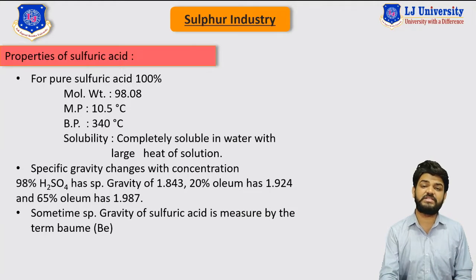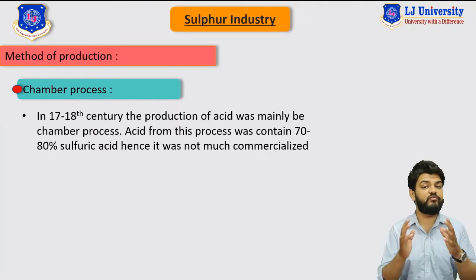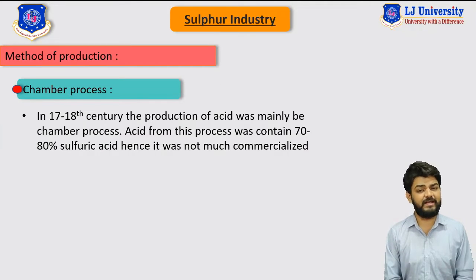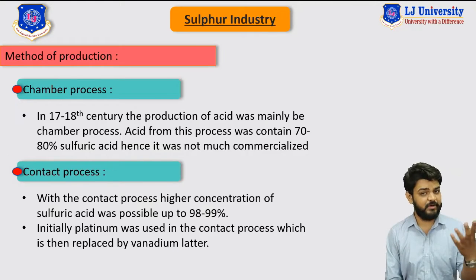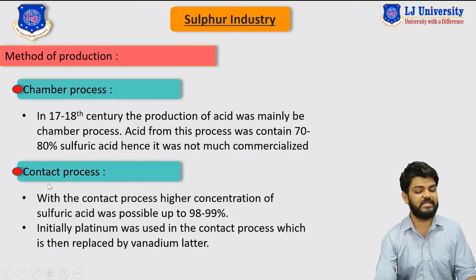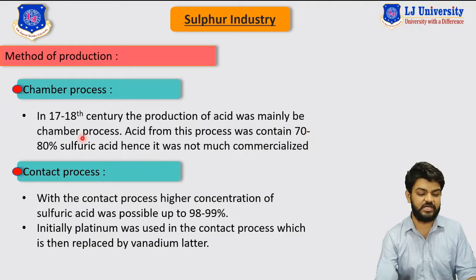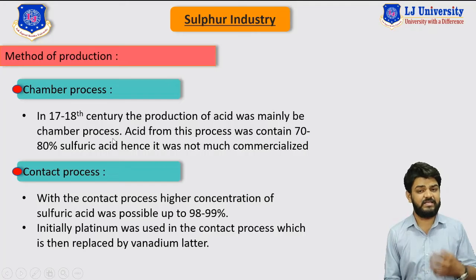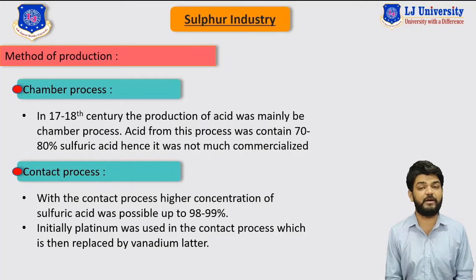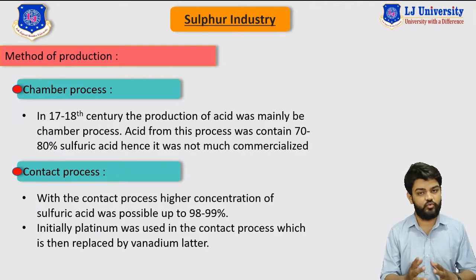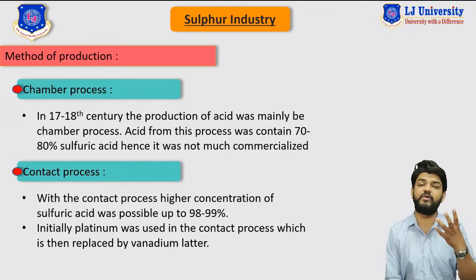There are basically two different methods used for the production of sulfuric acid. The first is the chamber process, which is the old process invented in the 18th century, and was largely used to produce sulfuric acid. With the chamber process we can produce sulfuric acid at a concentration of around 70 to 80%, which is not very suitable for commercial purposes as the concentration of the product is quite low.